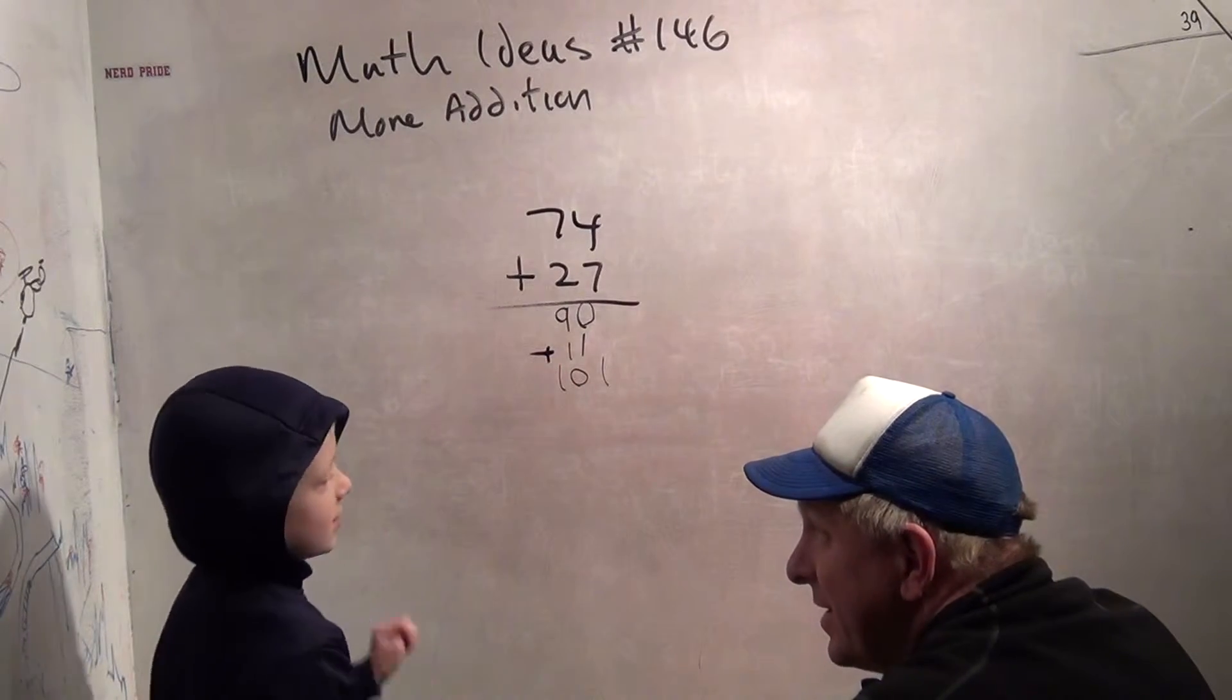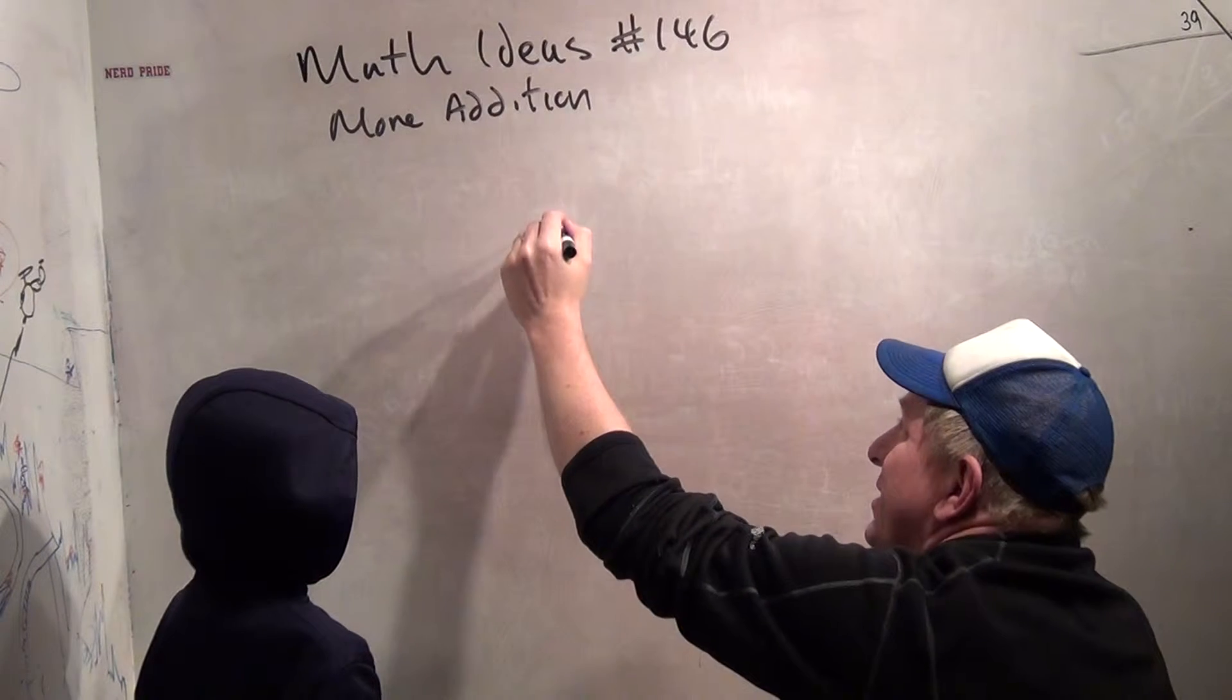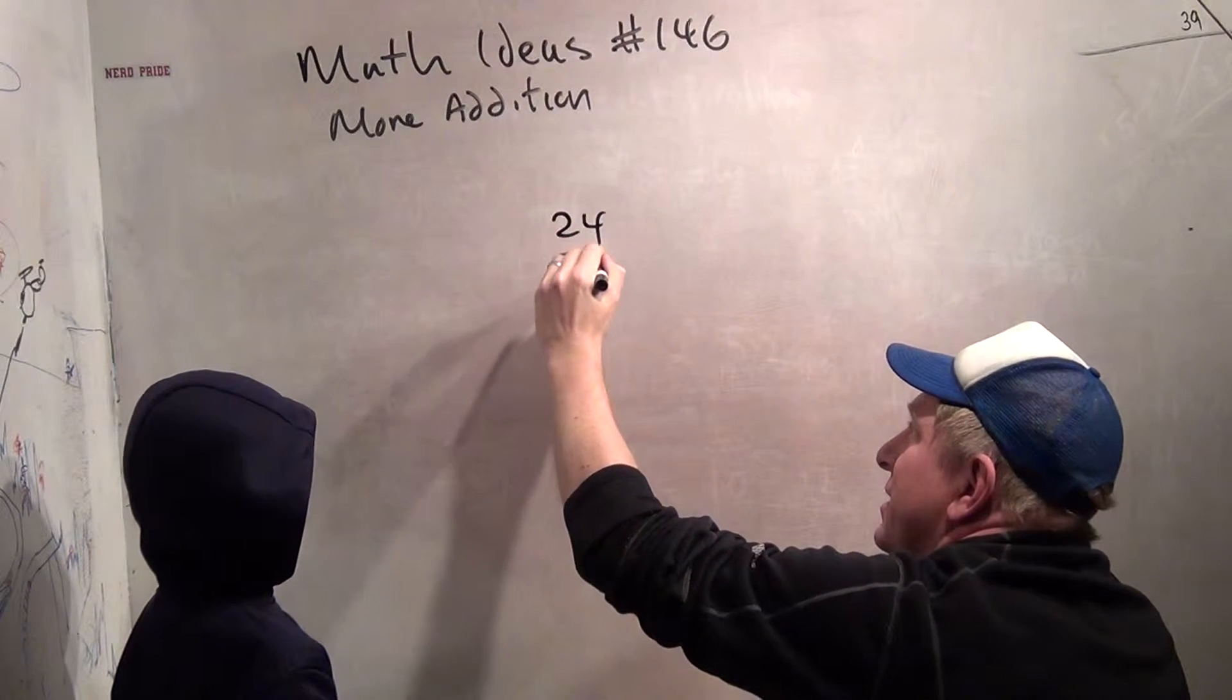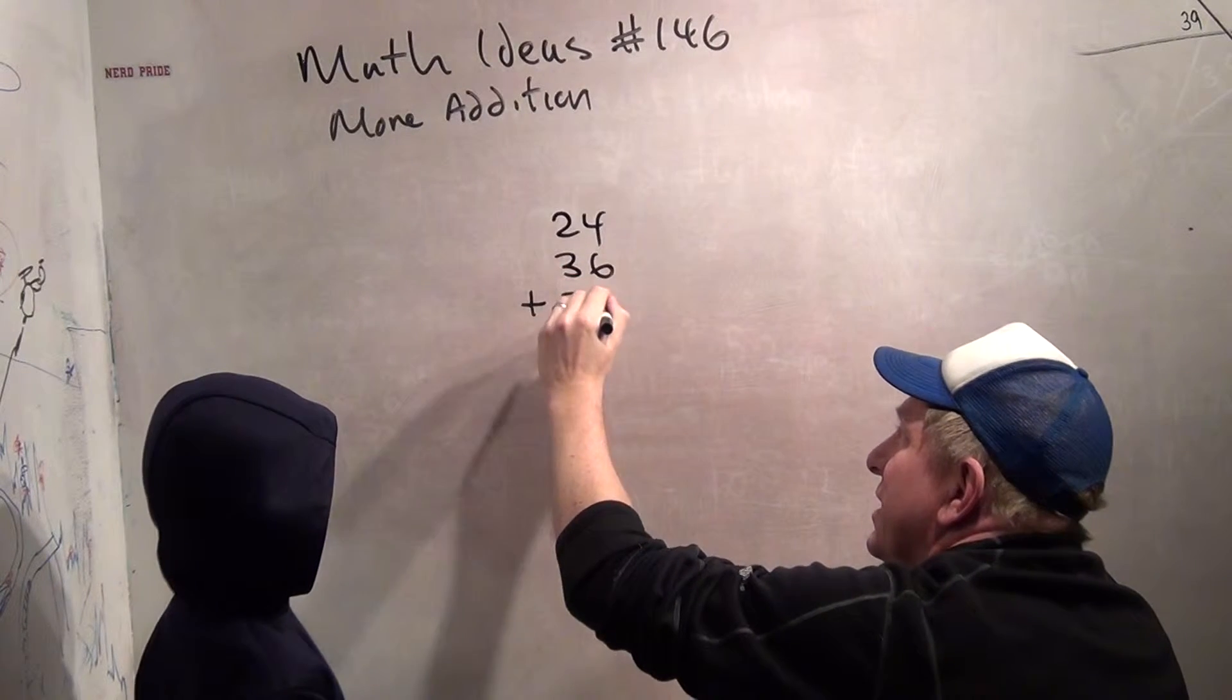You want a much harder one now? Yeah! Alright. Here we go. How about 24 plus 36 plus 52.